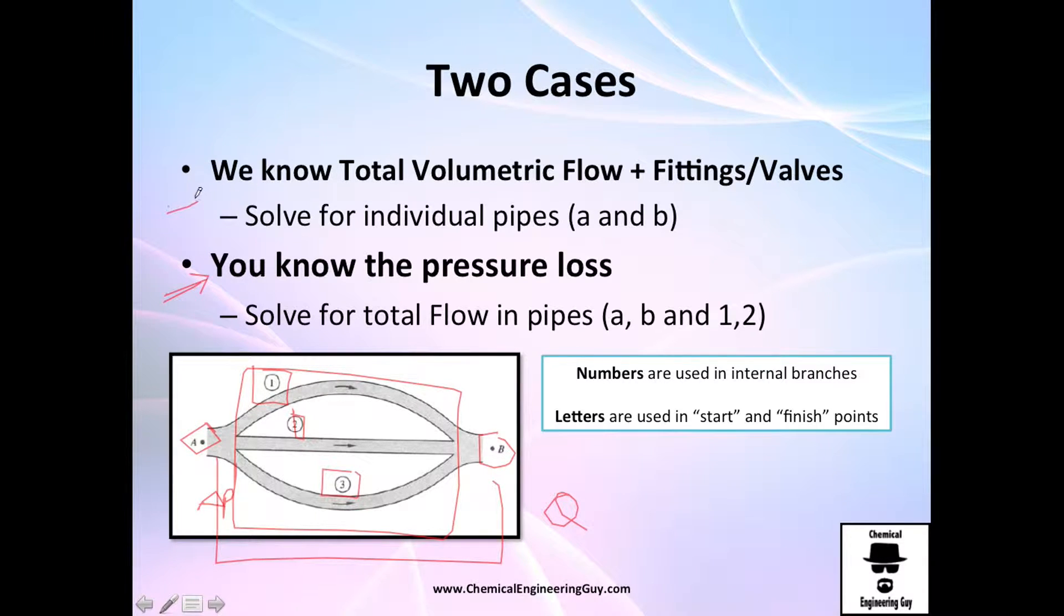Or the first case is we know the volumetric flow rate, at least in A, and of course because A and B is the same, we know the one in B. We know all type of fittings and valves, so we don't know the friction loss, we need to solve for that, calculate the friction loss, but since we don't know how much friction we have, we don't know the velocities, and you need to know the velocities in order to calculate the friction.